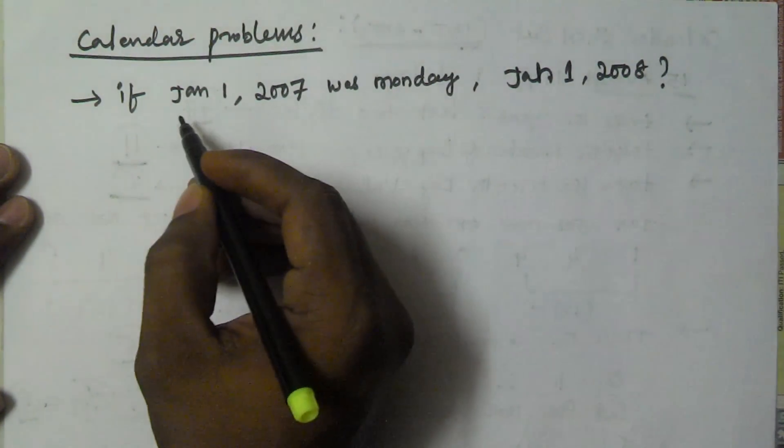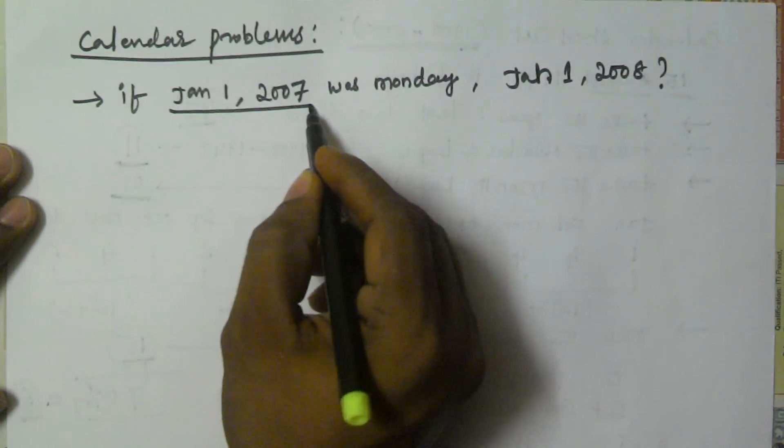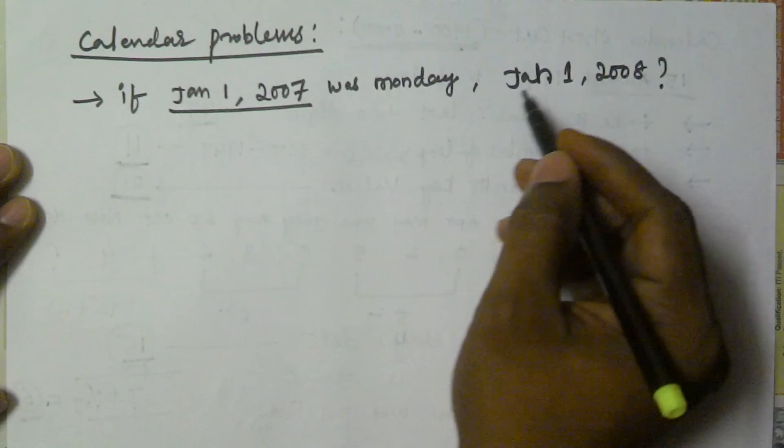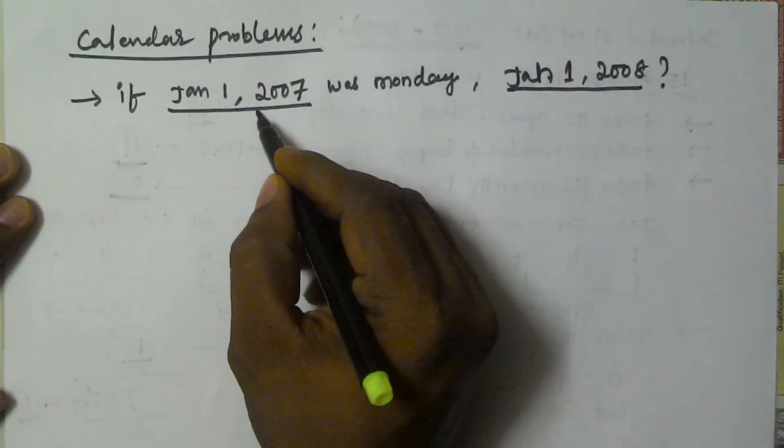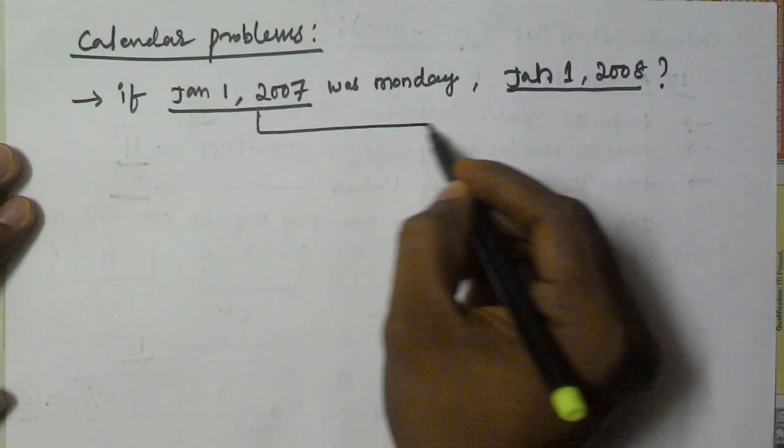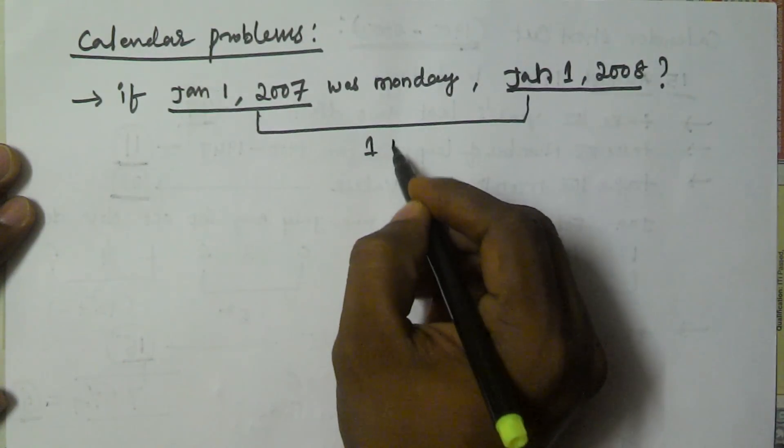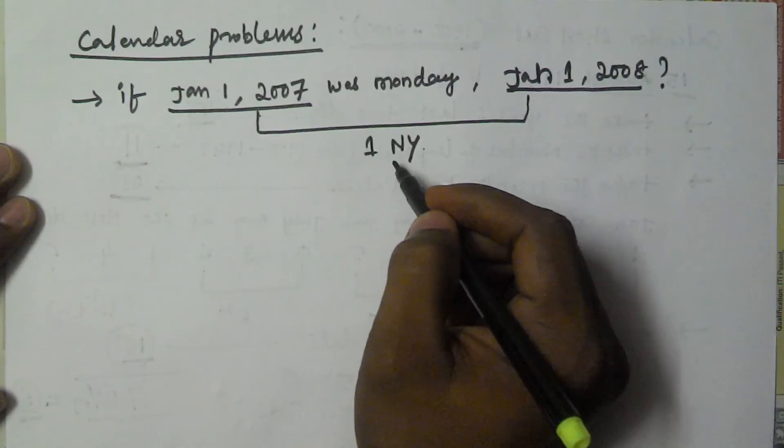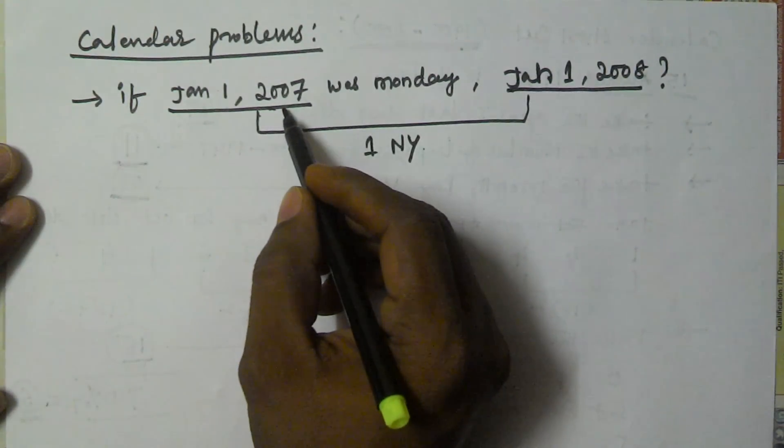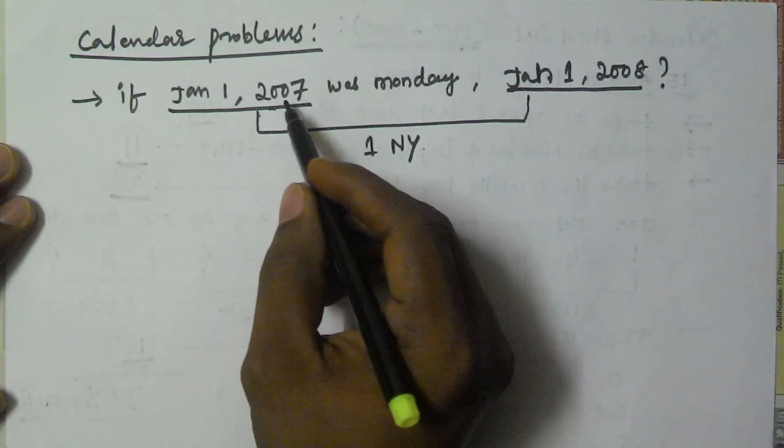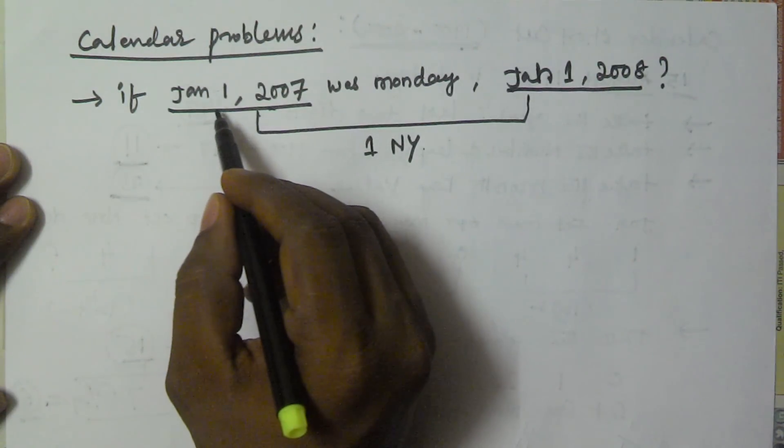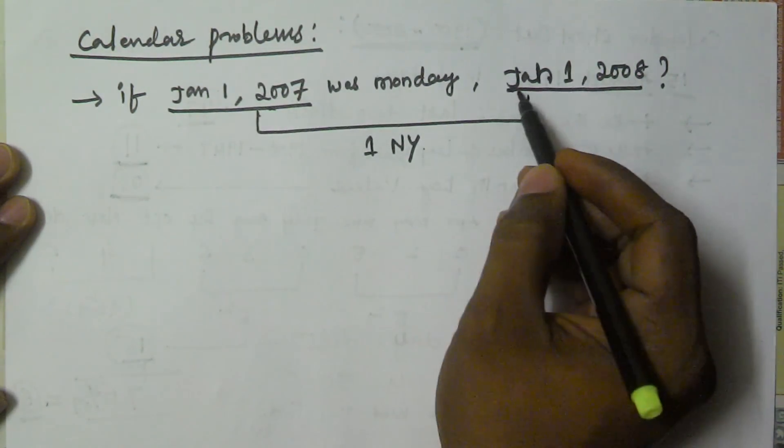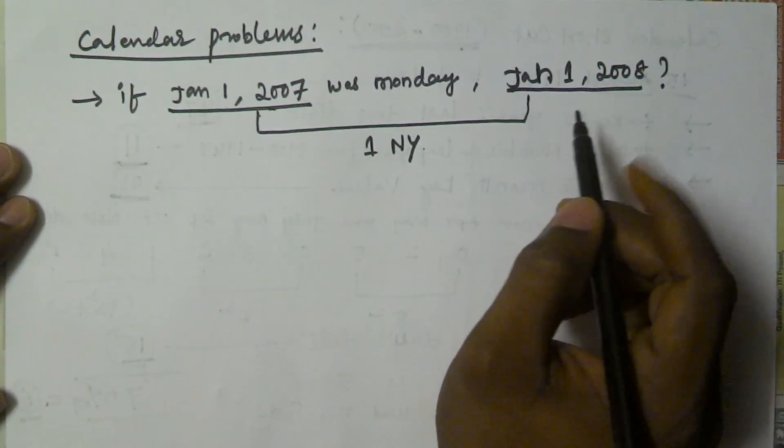So if you see from January 1st, 2007 to January 1st, 2008, one year is there. One normal year is there. Why I am saying normal year? Because 2007 is not a leap year. So January 1st, 2007 to January 1st, 2008, one normal year.